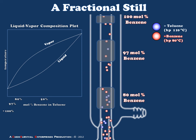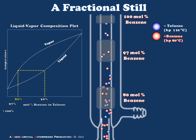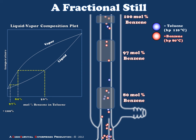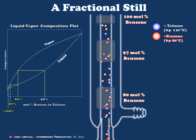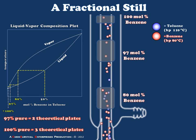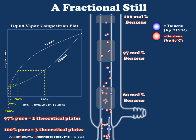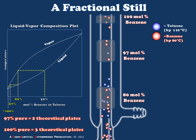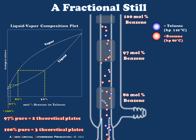Looking back at the liquid-vapor composition plot, starting from a 50 mole percent mixture, a single distillation yields an 80 percent pure distillate; a second distillation yields 97 percent pure; and a third redistillation gives essentially 100 percent pure benzene. If we set up a fractional still and empirically determine that the collected distillate is 97 mole percent benzene, we report that the still is operating at two theoretical plates — producing a distillate of similar purity to two rounds of serial distillation. If we obtain about 100 percent pure benzene, we report approximately three theoretical plates. This gives us a way to report on the efficiency and effectiveness of a fractional still.